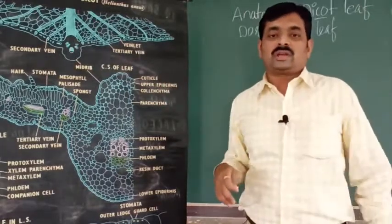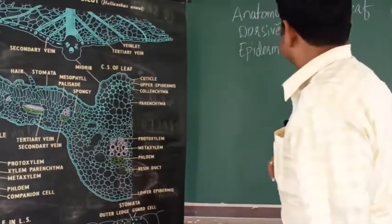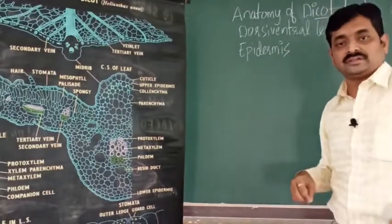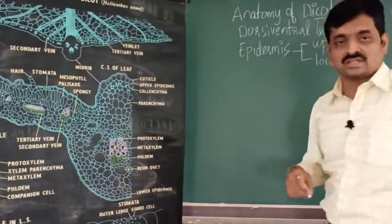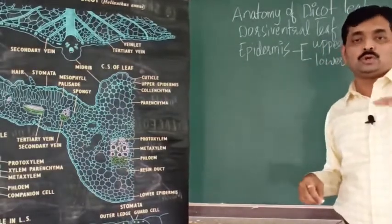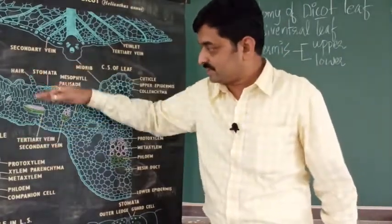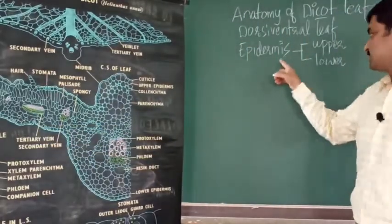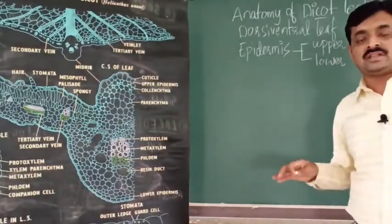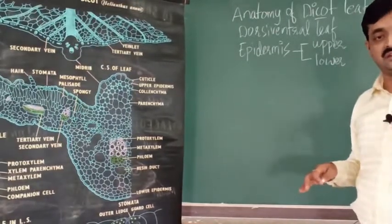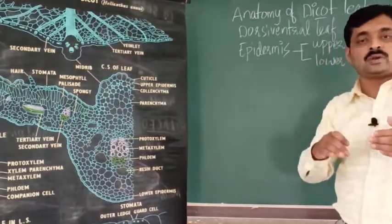In the section you can observe the epidermis. The epidermis in dicot leaf has an upper surface and a lower surface — upper epidermis and lower epidermis. Upper and lower epidermis are not the same; they are distinct, with clear-cut differentiation. That's why it is called dorsiventral leaf.